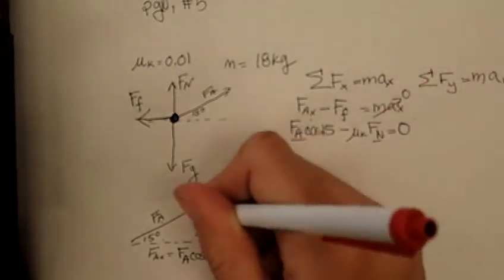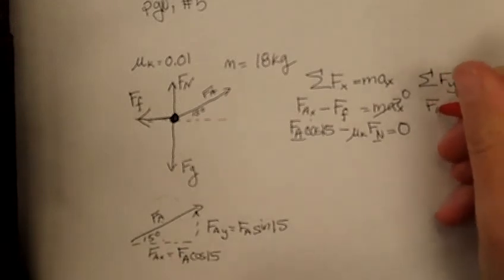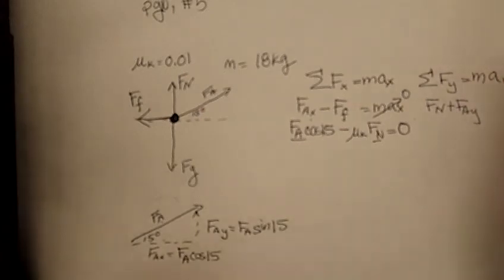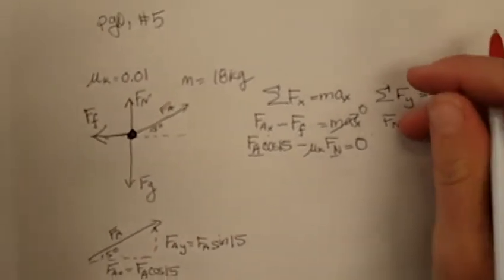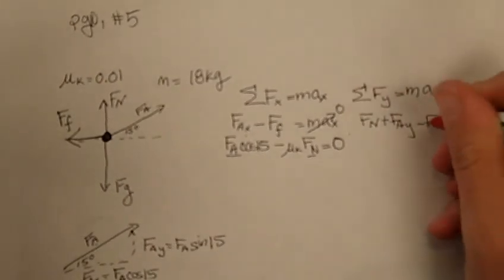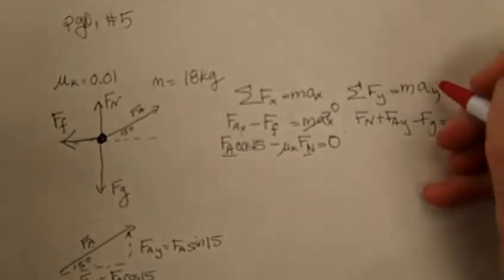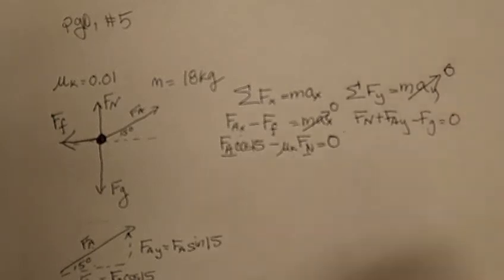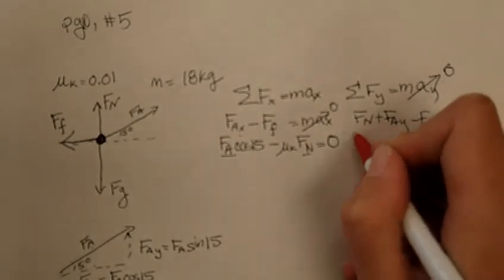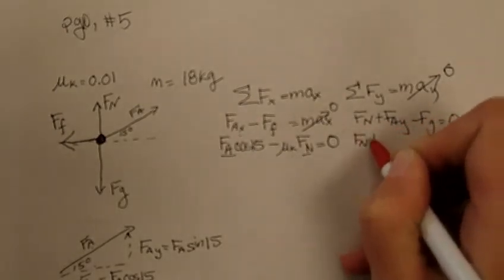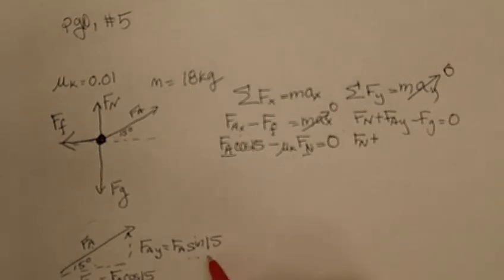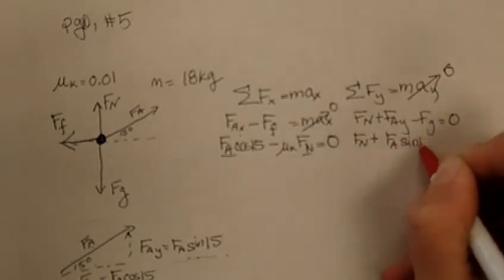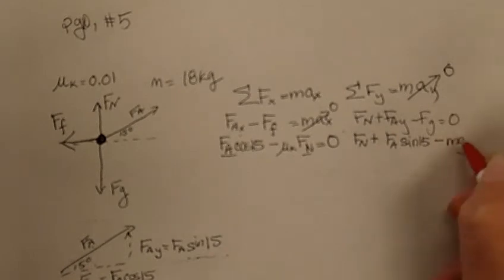In the Y direction, we have FN is up, so it's up minus down, FN plus FAy minus the down forces. So minus FG is equal to MAy. It's not moving up and down, so MAy is going to be equal to 0. So I have that is equal to 0, then I'm going to plug in FN plus, I know that FAy is FA sine 15, minus MG equals 0.